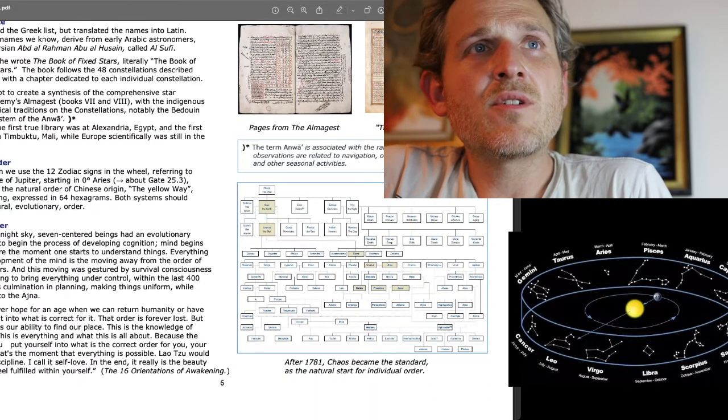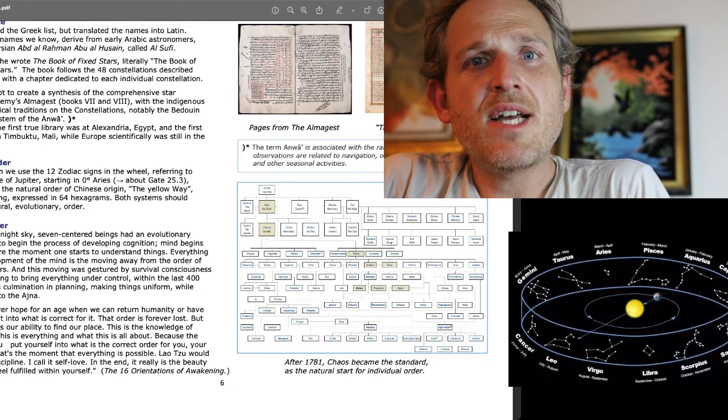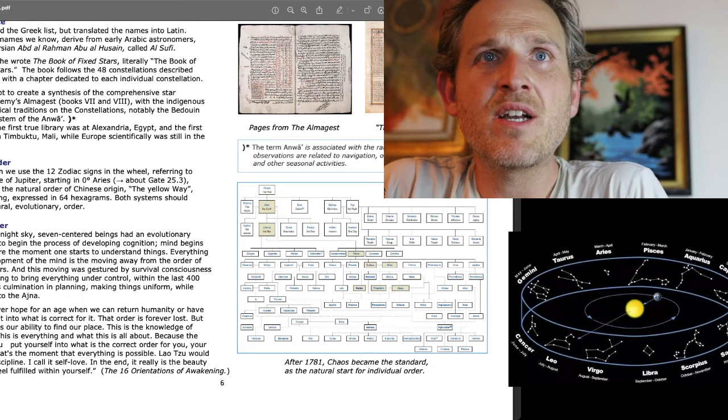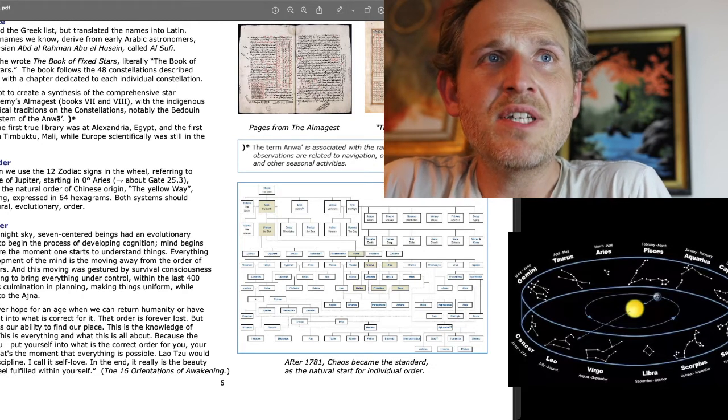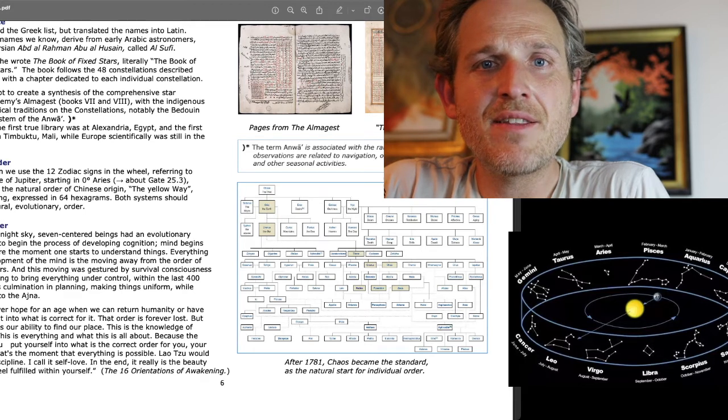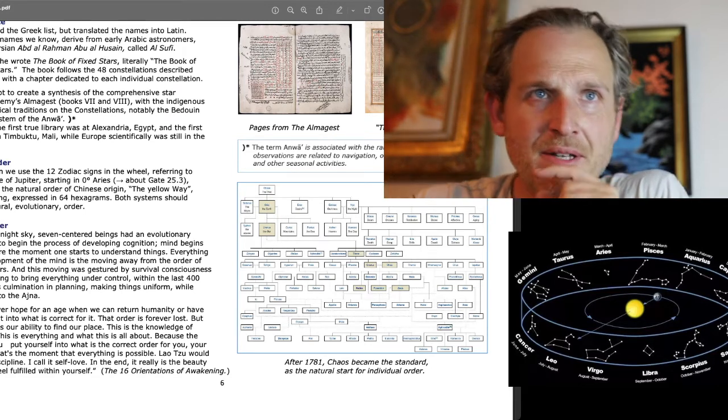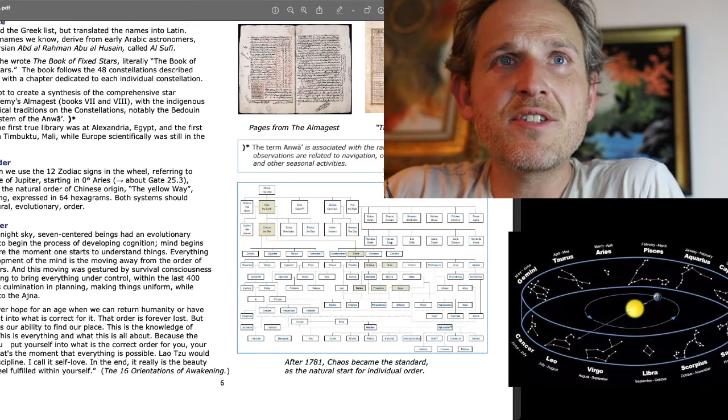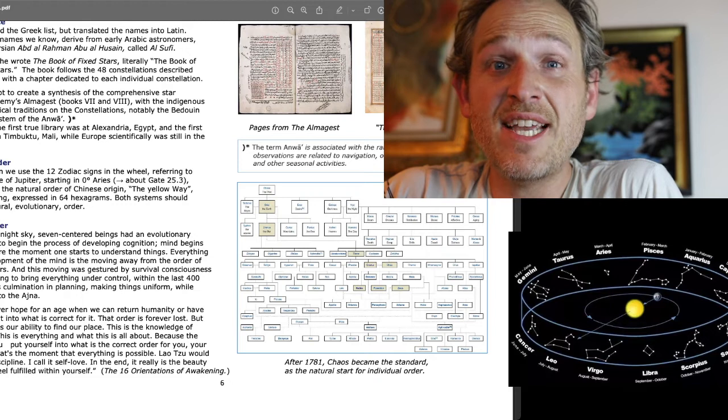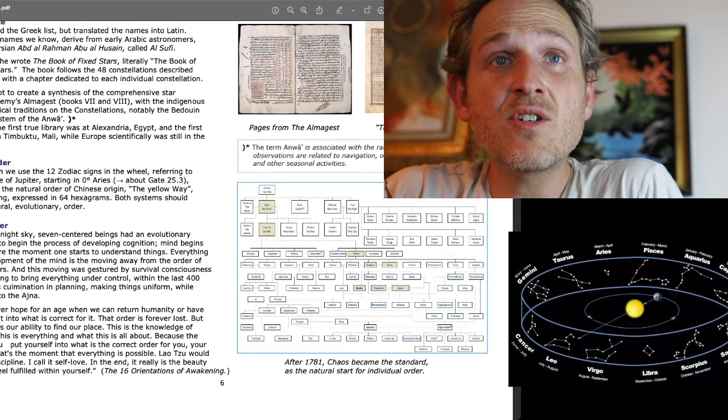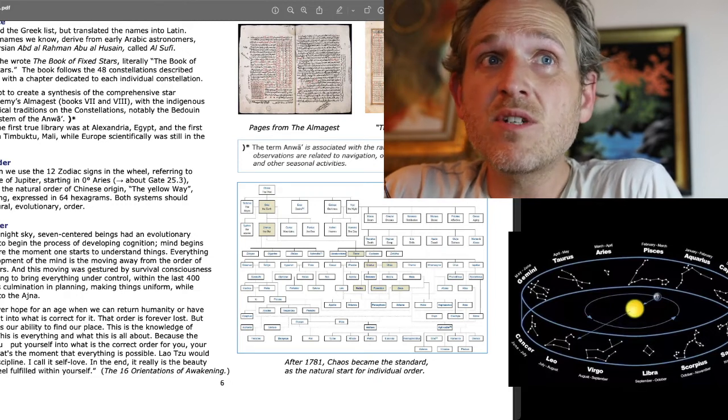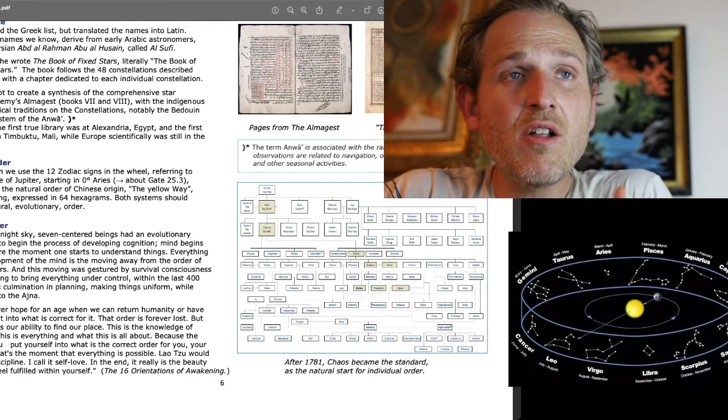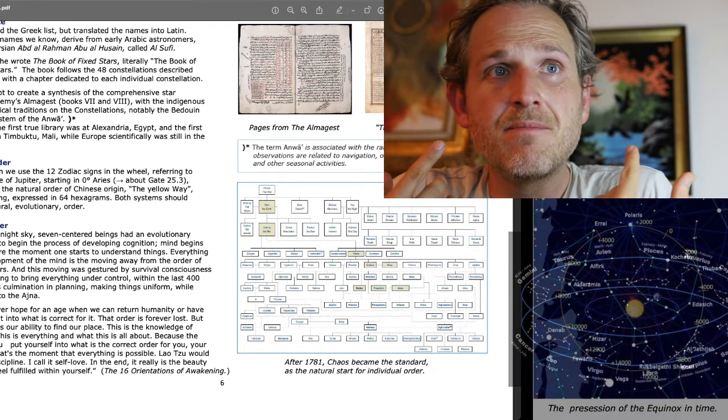The loss of order. In exploring the night sky, seven-centered beings had an evolutionary drive to begin the process of developing cognition. Mind begins to confront nature the moment one starts to understand things. Everything about the development of the mind is the moving away from the order of their predecessors, and this moving was gestured by survival consciousness, gate 50, wanting to bring everything under control, within the last 400 years causing its culmination in planning, making things uniform, while all energy went to the Ajna.